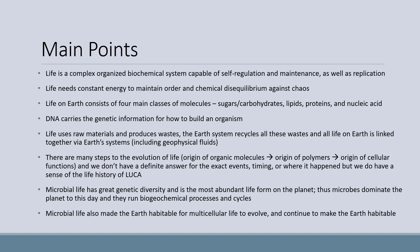That concludes the material. Let's review the main points. Life is a complex, organized, biochemical system capable of self-regulation and maintenance, as well as replication. Life needs constant energy to maintain order and chemical disequilibrium against chaos. Life on Earth consists of four main classes of molecules: sugars or carbohydrates, lipids, proteins, and nucleic acids. DNA carries the genetic information for how to build an organism. Life uses raw materials and produces wastes. The Earth's system recycles all these wastes, and all life on Earth is linked together via Earth's systems, including geophysical fluids. There are many steps to the evolution of life — the origin of organic molecules, the origin of polymers, the origin of cellular functions — and we don't have a definitive answer for the exact events, timing, or where it happened, but we do have a sense of the life history of LUCA.